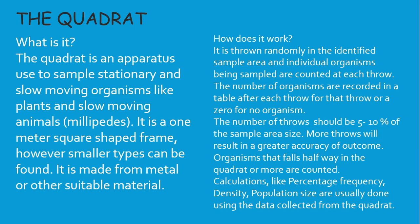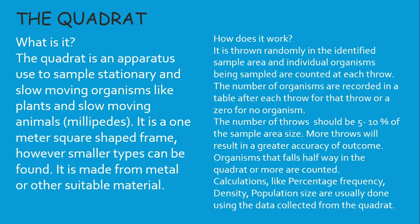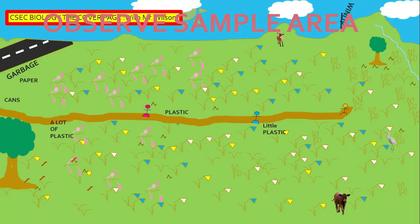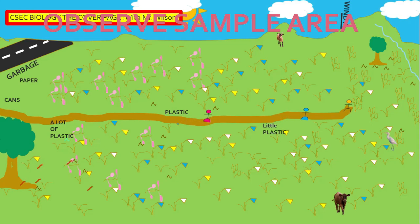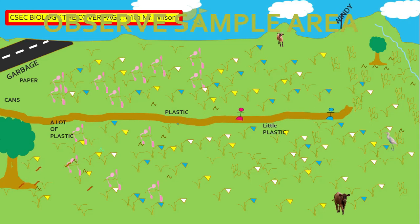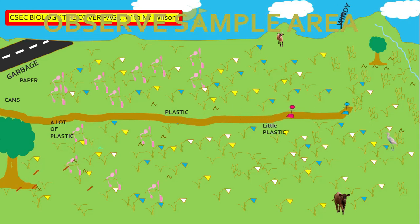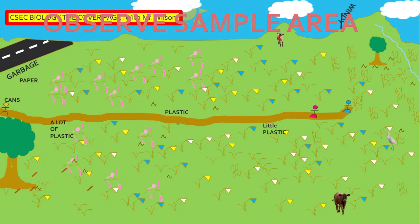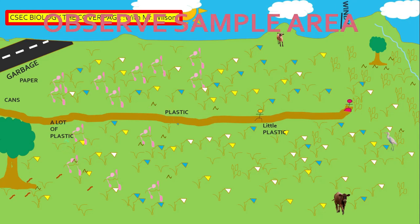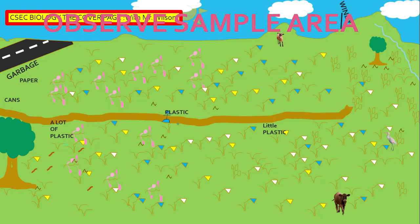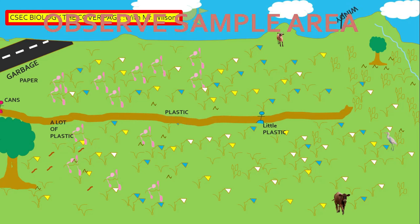Let's look at the lab. To sample an area, it is very important to observe the area. We would have seen a road, garbage, footpath, human activity, plants and animals in the area.